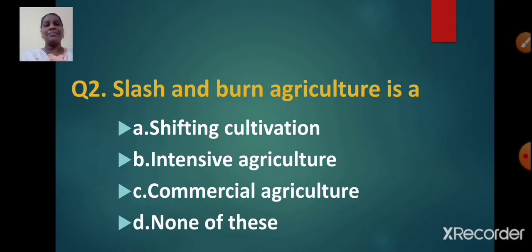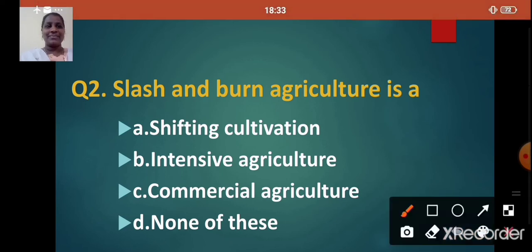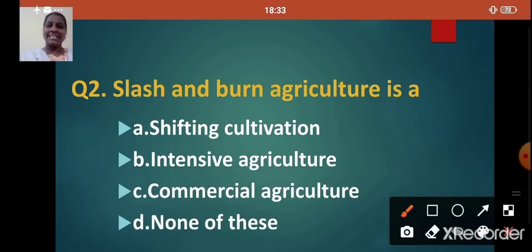Next question: Slash and burn agriculture is a — option A: shifting cultivation, option B: intensive agriculture, option C: commercial agriculture, option D: none of these. The correct answer is option A, shifting cultivation. Slash and burn agriculture is a shifting cultivation.